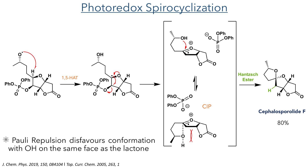The resulting oxonium intermediate can exist in two different conformations. In the conformation shown at the bottom, a contact ion pair is formed between the phosphate anion and the oxonium. This orientates the side chain towards the bottom face of the ring, and this is disfavoured due to the 1,3-diaxial repulsion between the hydroxyl group and the lactone. Instead, the conformation with the side chain on the top face of the ring is favoured, and this allows for the hydroxyl group to be stereoselectively captured to form the desired spirochetal and complete the synthesis of cephalosporolite F.